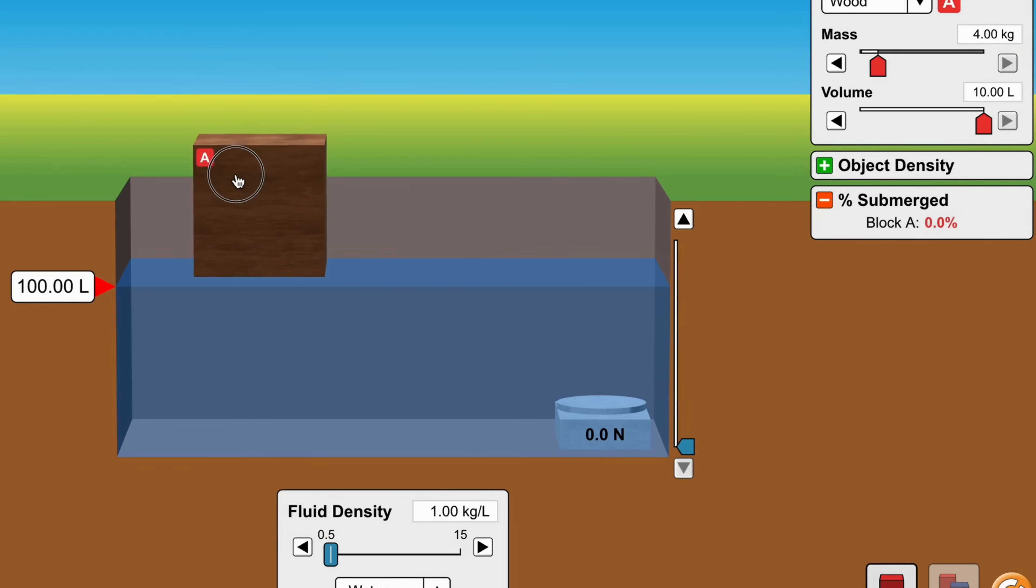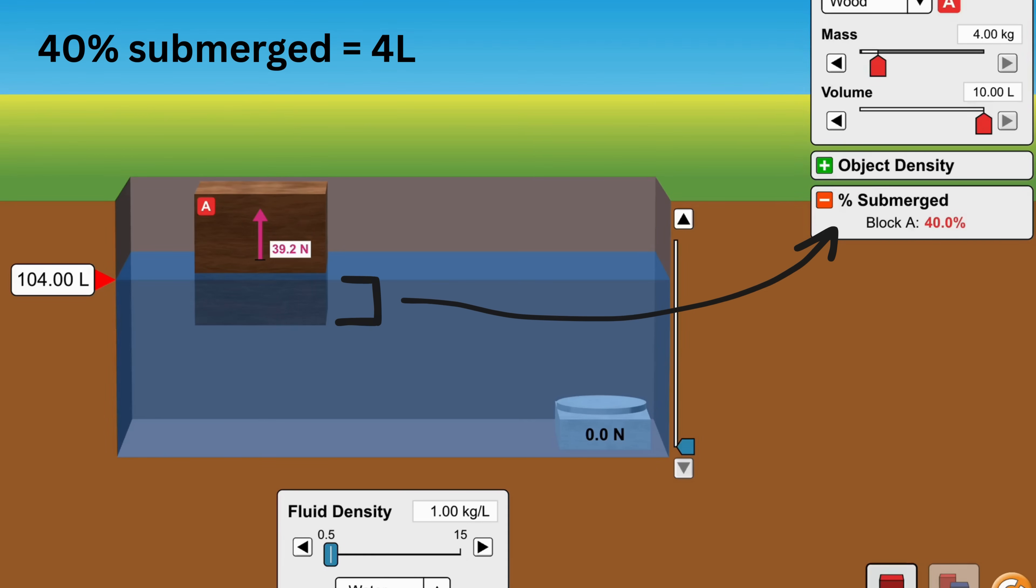Now when I slowly submerge a cube whose volume is 10 liters into the fluid, say 40% or 4 liters submerged inside like this, we have this red upward arrow representing buoyancy, which is 39.2 newtons right now. Also, the total volume of the fluid plus only the submerged part is therefore 104 liters.